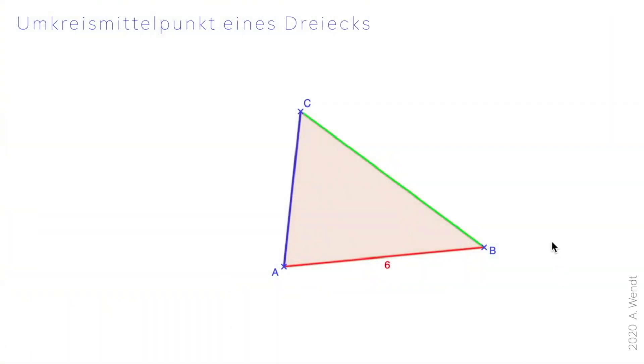Ich habe hier ein Dreieck gezeichnet. Unten habe ich die Seite AB ausgemessen. Zunächst sollt ihr auf dieser Seite die Mittelsenkrechte zeichnen. Für eine Denkpause stoppt das Video jetzt.